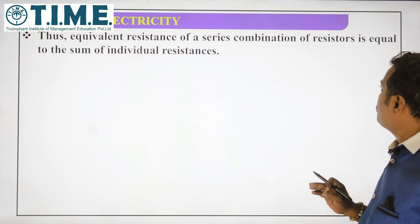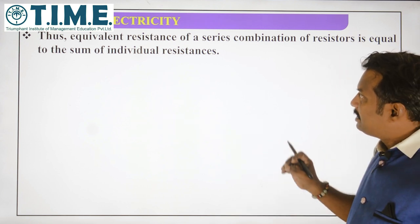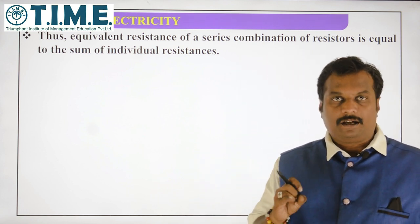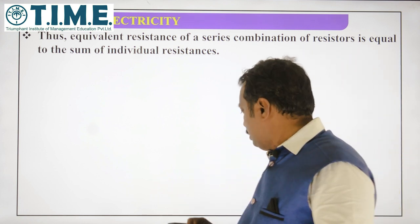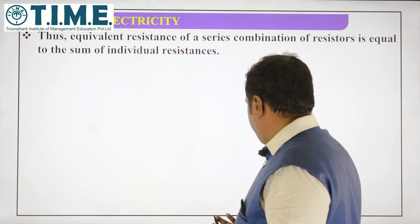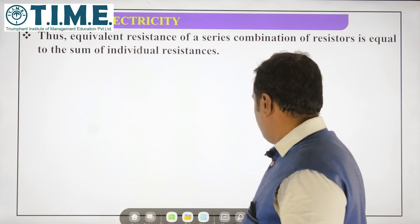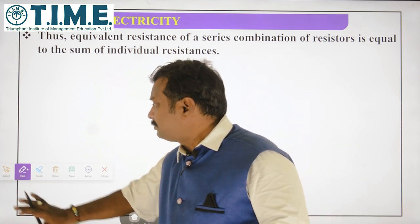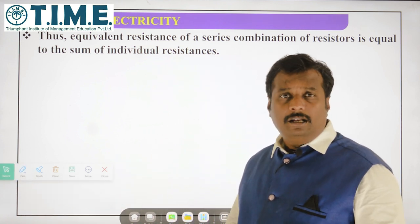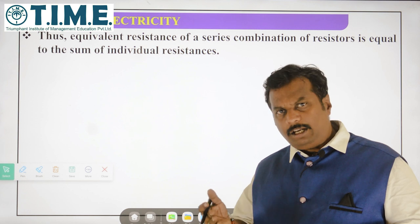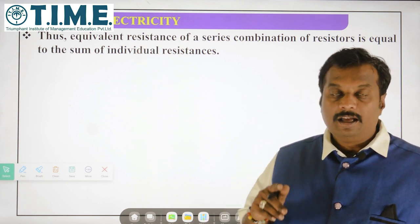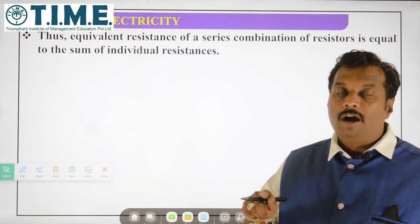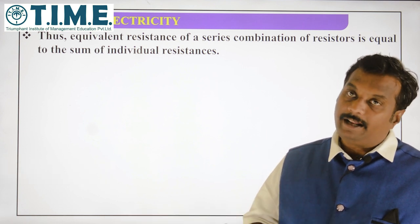The equivalent resistance of a series combination of resistors is equal to the sum of the individual resistors. For example, if R1 = 10 ohm, R2 = 20 ohm, R3 = 30 ohm, then effective resistance = 10 + 20 + 30 = 60 ohm. The effective resistance in case of series combination RS will be greater than the greatest resistor.